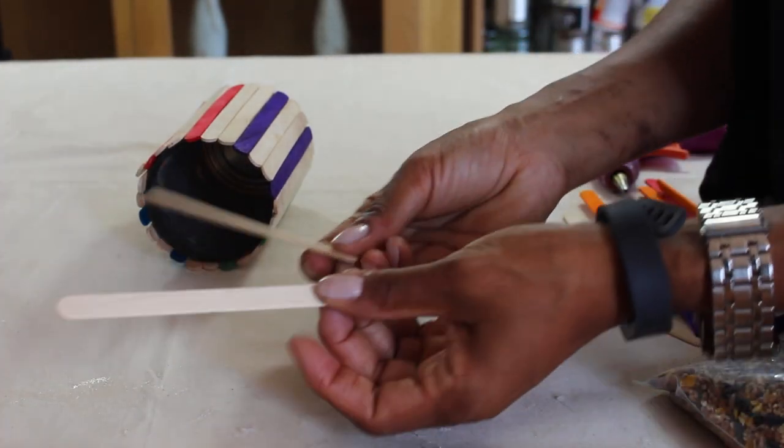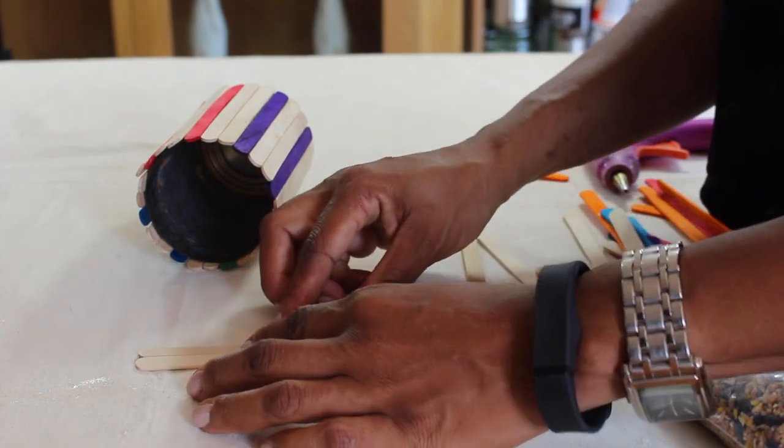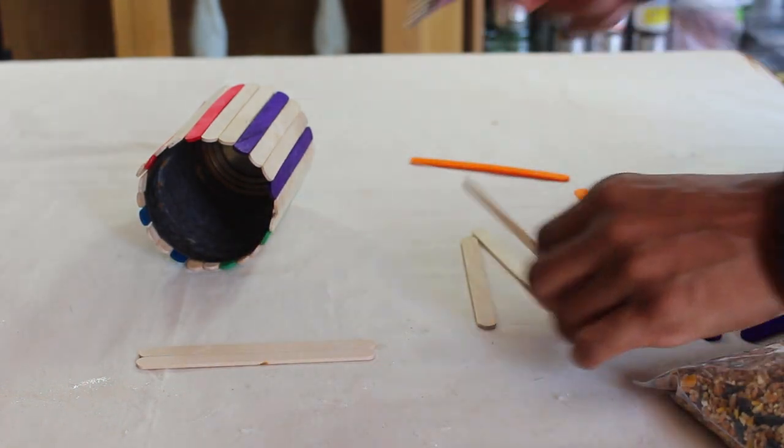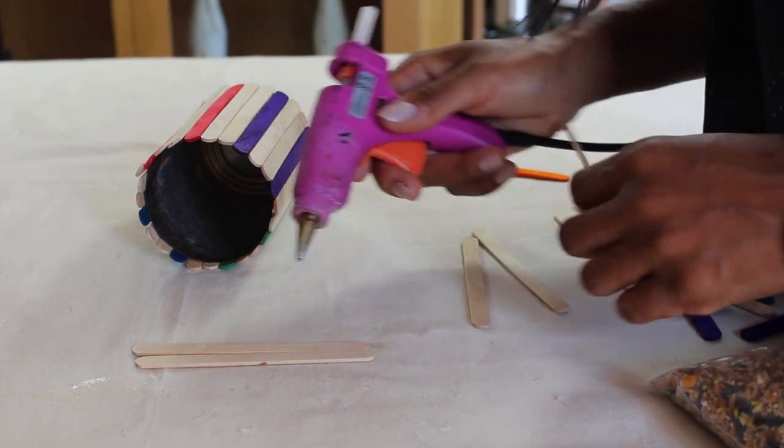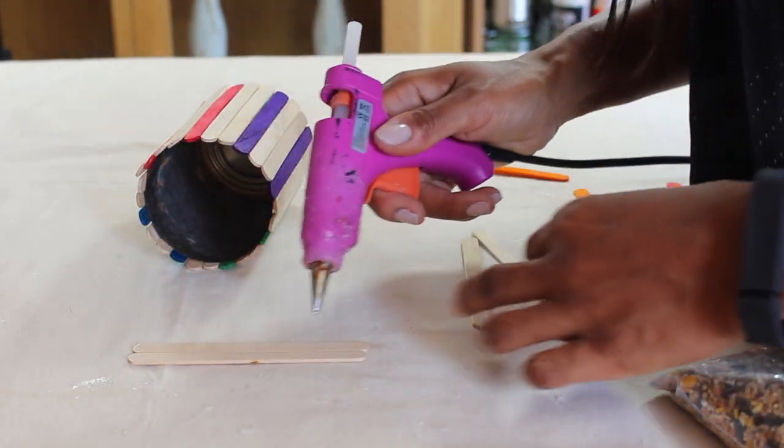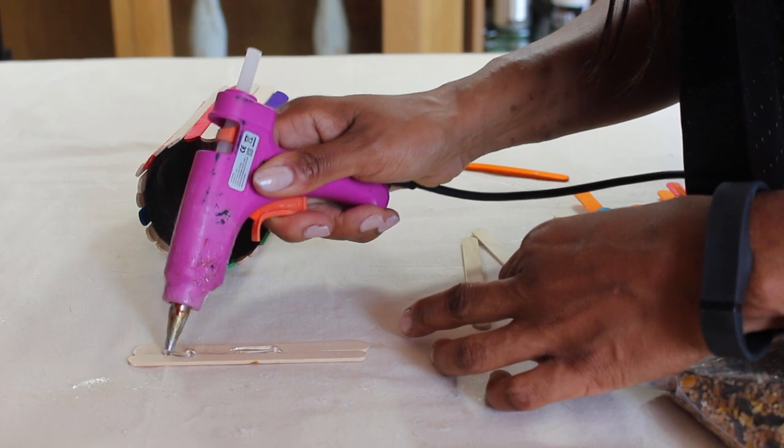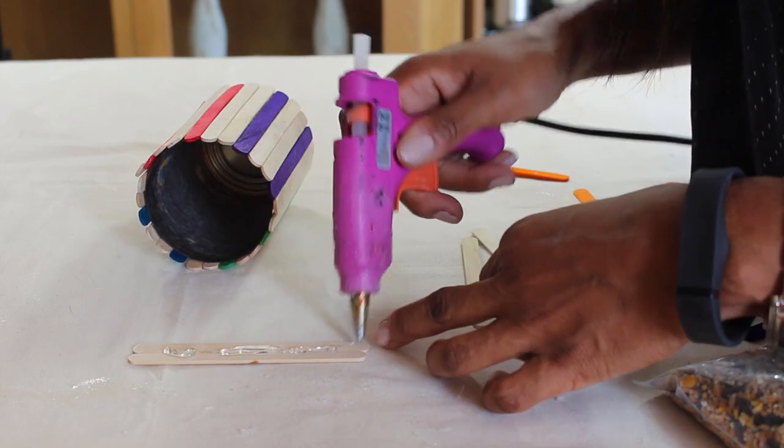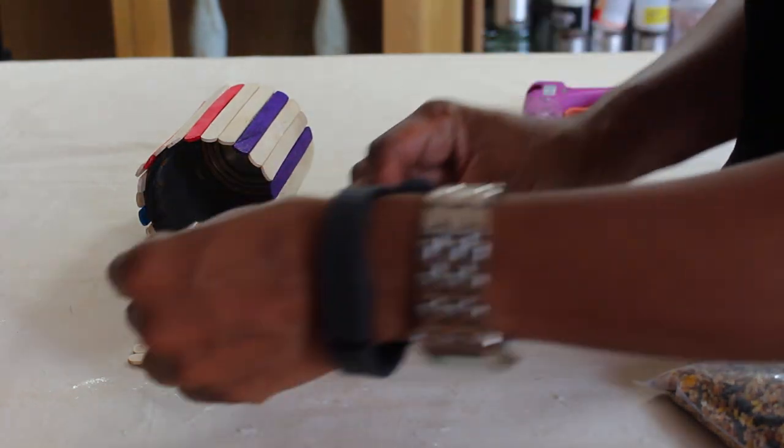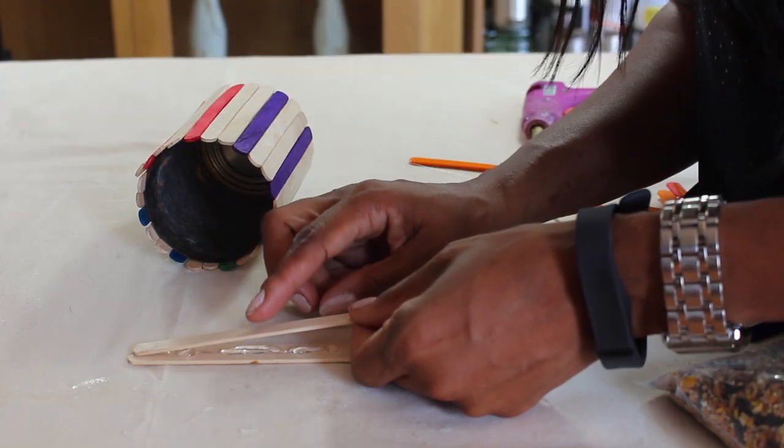To finish off, we're going to use two lollipop sticks joined together by a third one on the top, and this is going to be the perch that the birds sit on when they eat the feed. Then we'll put a ribbon or string around the center of the feeder so you can hang it from a tree.